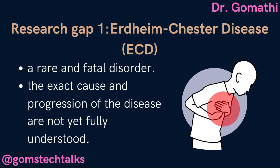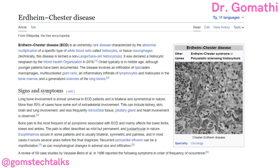The first research gap I have identified is for Erdheim-Chester disease, that is ECD. This disease is a rare and often fatal form of non-Langerhans cell histiocytosis that affects multiple organ systems, including the bone marrow, central nervous system and cardiovascular system. You can learn completely about this particular disease in Wikipedia to get a full background.